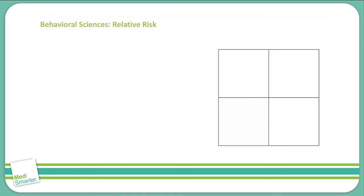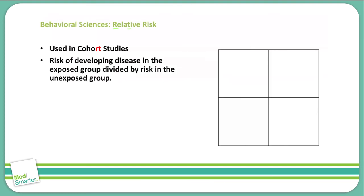The next calculation is relative risk. Relative risk is used in cohort studies — remember that the RT in cohort corresponds to the R and T in relative. Relative risk tells us the risk of developing a disease in an exposed group divided by the risk in an unexposed group. The formula is A divided by (A plus B), all over C divided by (C plus D).